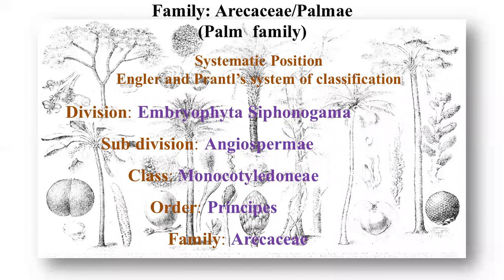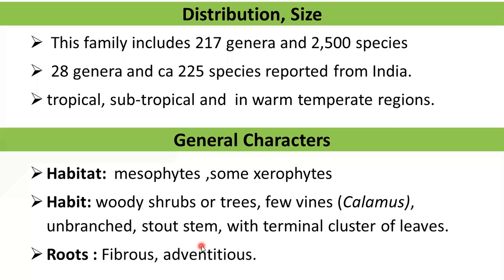The Arecaceae family is also called as the family Palmae. It is commonly called as the palm family and the type genus is Cocos nucifera, that is the coconut. According to Engler and Prantl's system of classification, this family belongs to division Embryophyta Siphonogama, subdivision Angiospermae, class Monocotyledonae, order Principes, family Arecaceae.